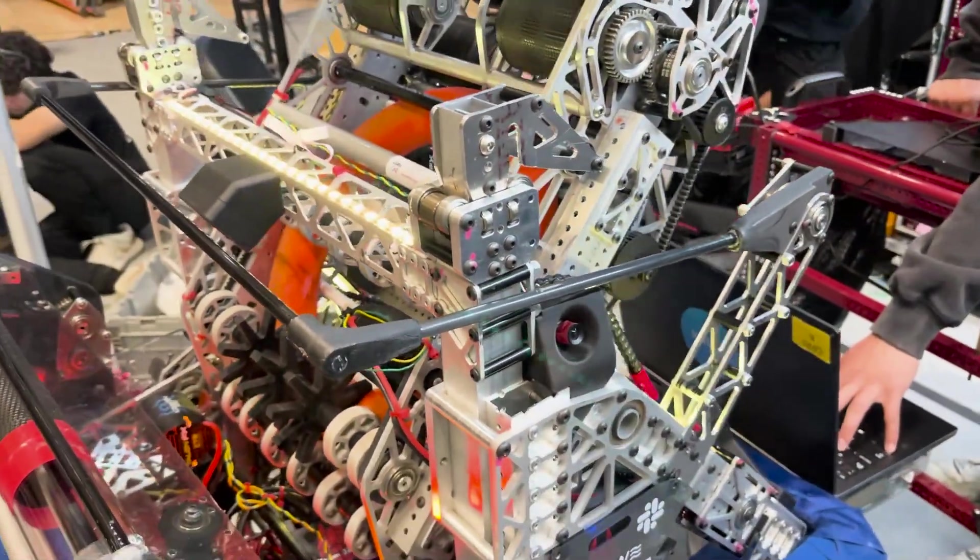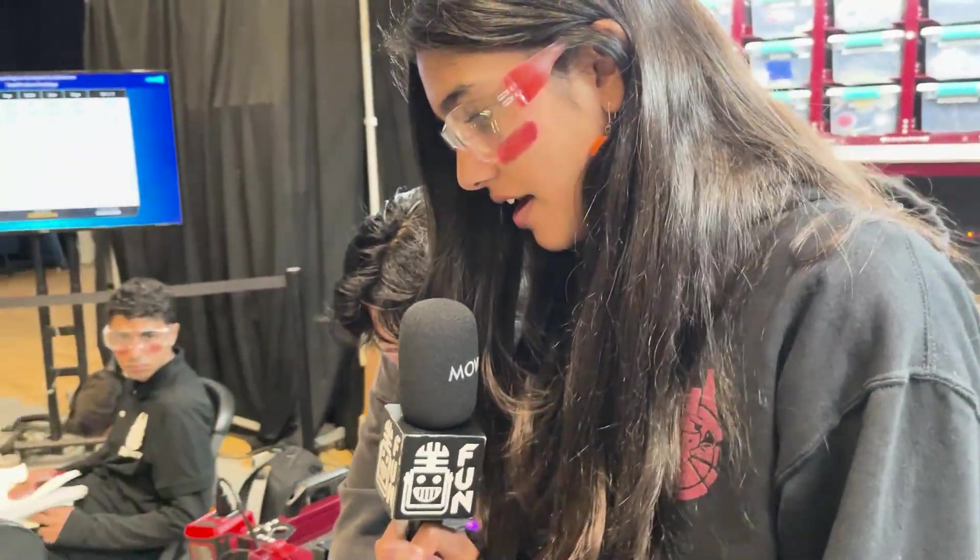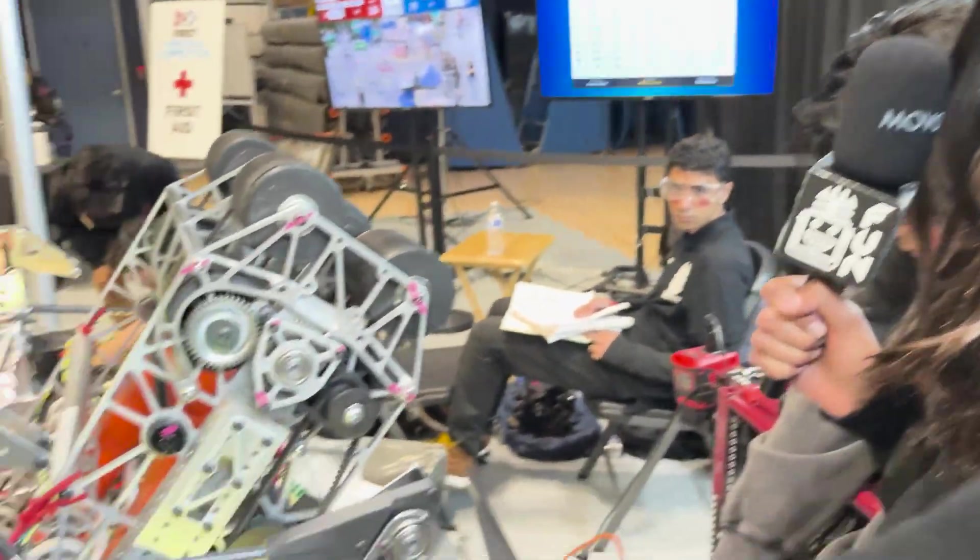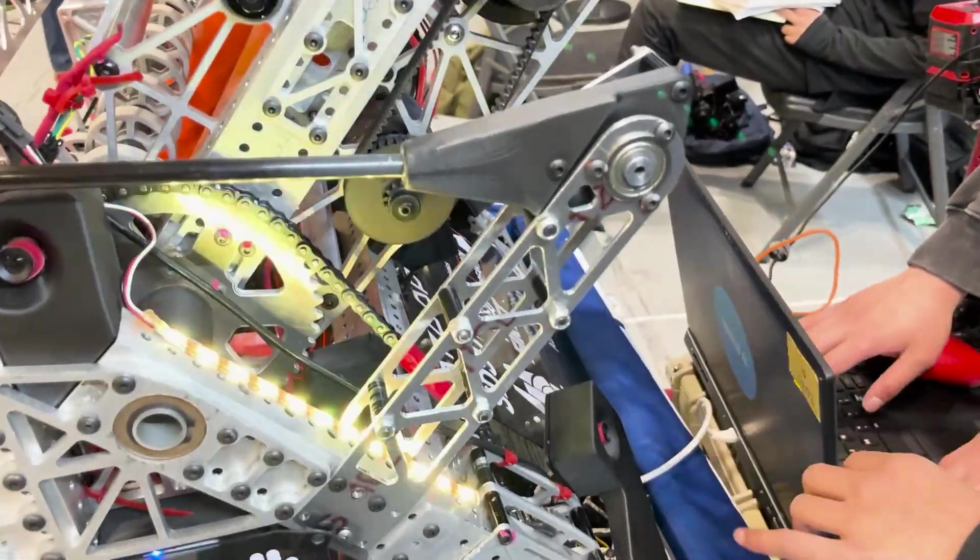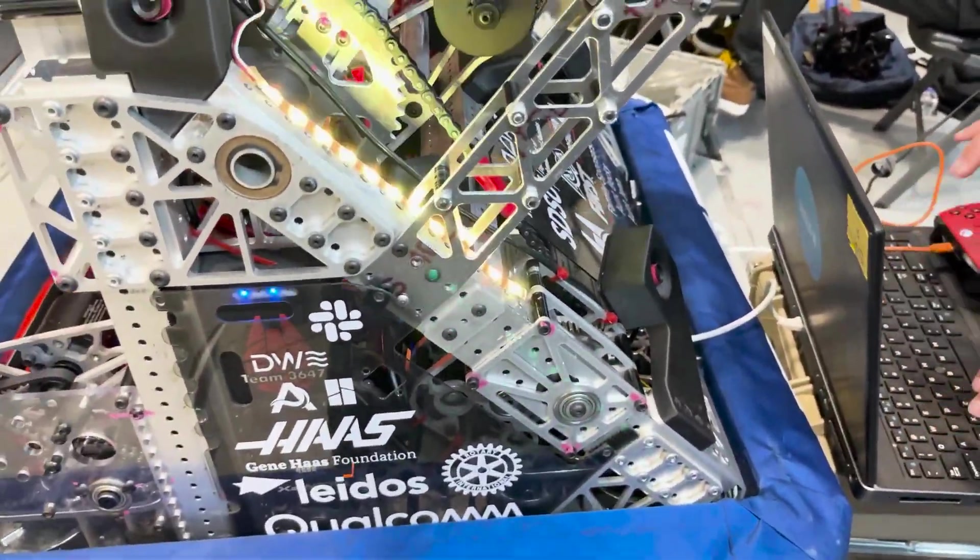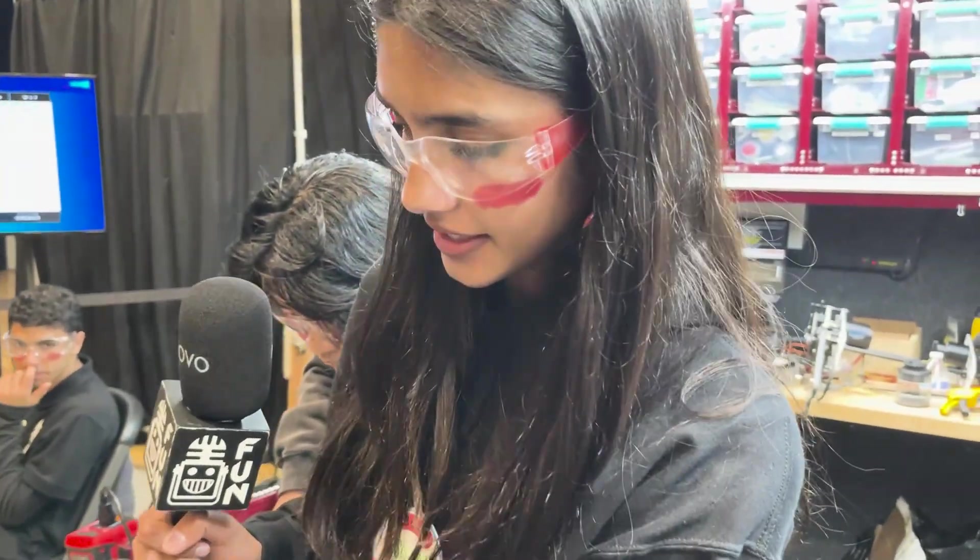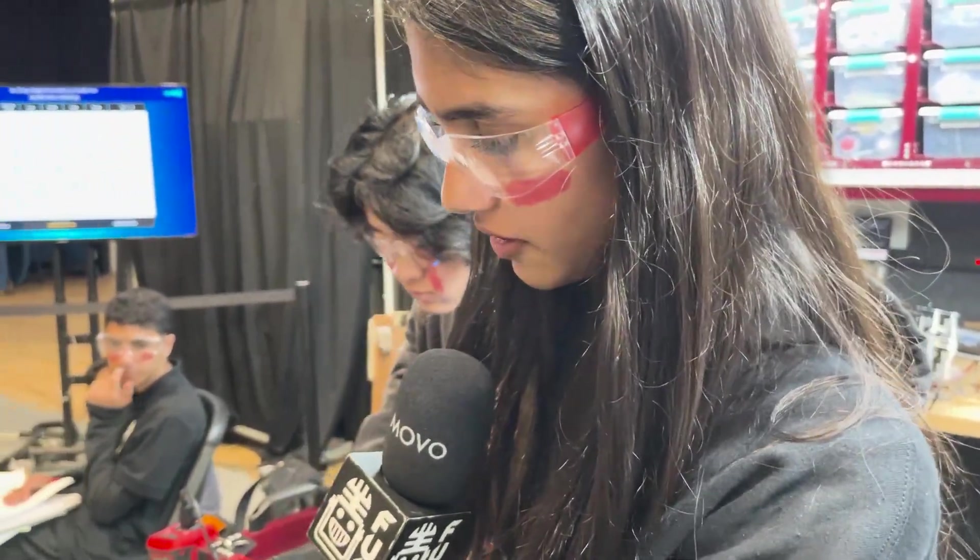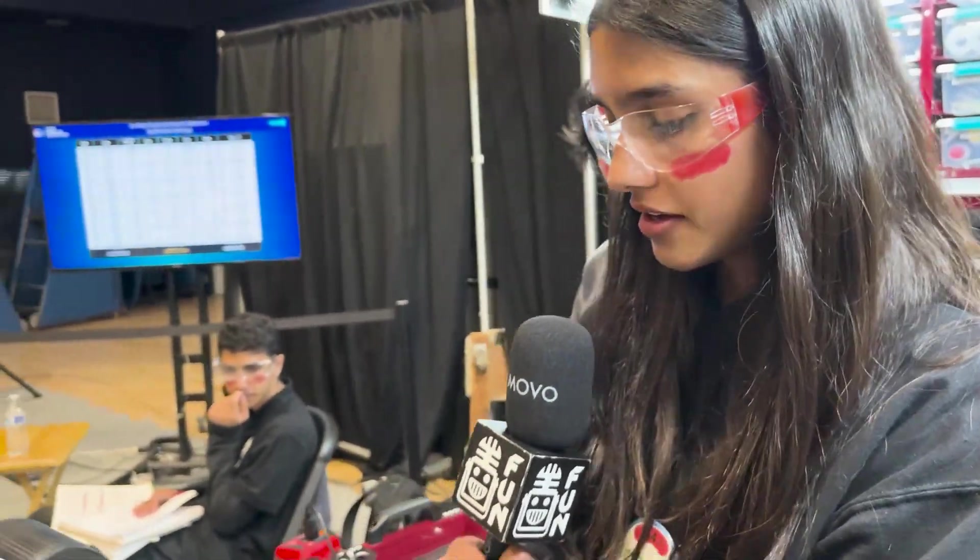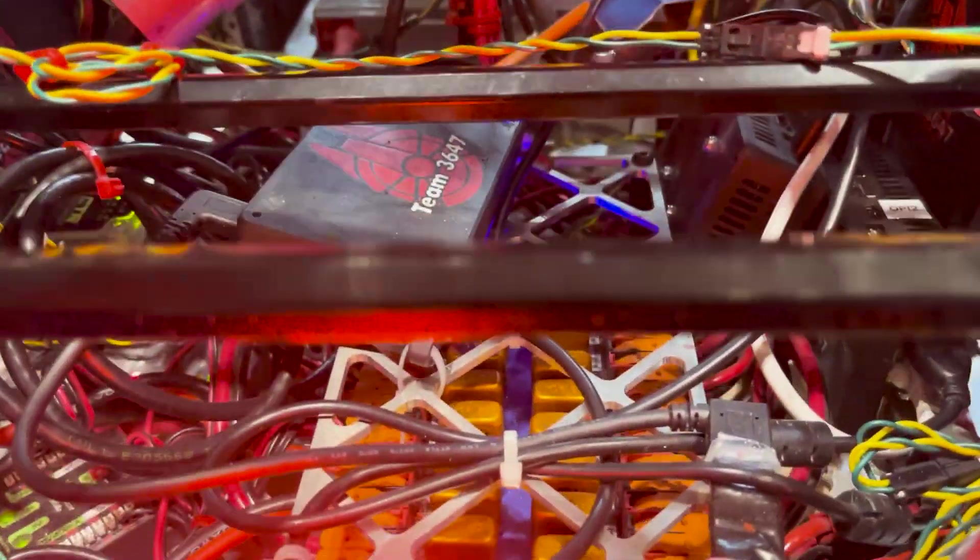So for the electrical systems, we have everything powered from our PDH, and then we have three CAN buses: two CANivores and then the Rio CAN chain. The first CANivore is powered to all the drivetrain motors and CANcoders, so that if we lose something else the drivetrain doesn't die.